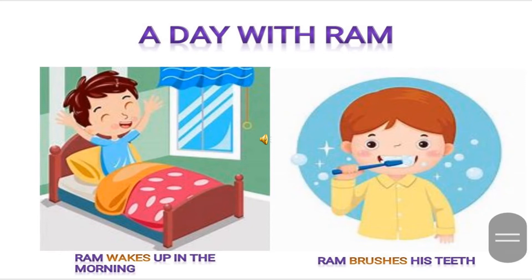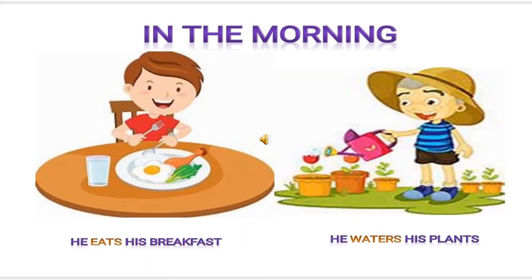Then Ram brushes his teeth. Here, brushes is a verb because he is doing some action — he is doing brush, so brushes is the verb here. In the morning, he eats his breakfast, so eat is an action word.